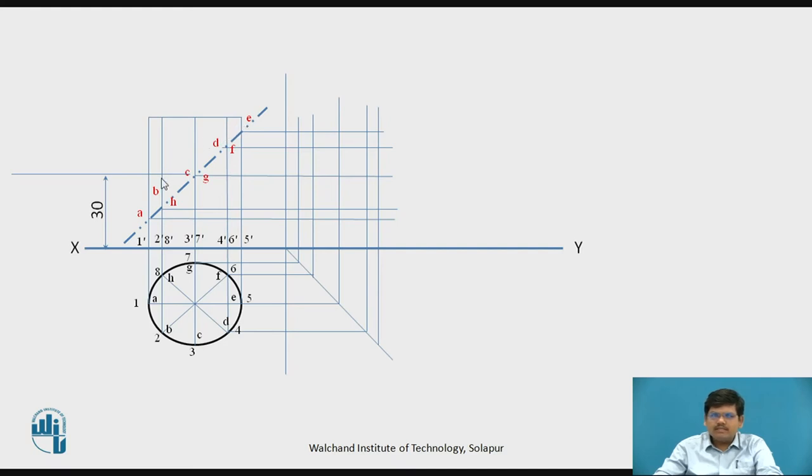So as we here do not have fixed edges we consider the generators wherever the cutting plane cuts the generators is the point marked. Now these are the points in side view, these are the points required for section. Now point A lies on generator 1, so the projection of generator 1 is over here. You can see the point A double dash over here.